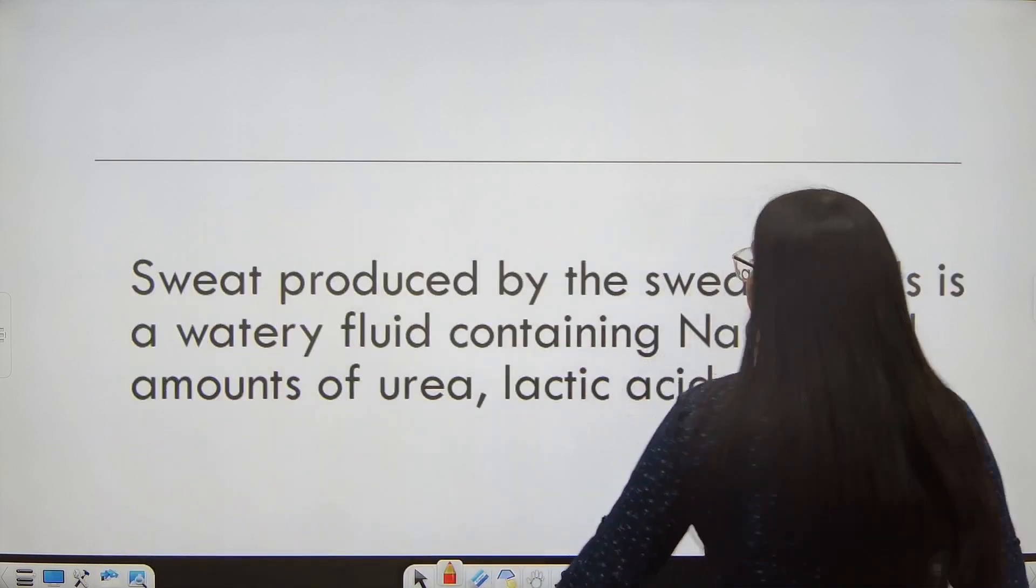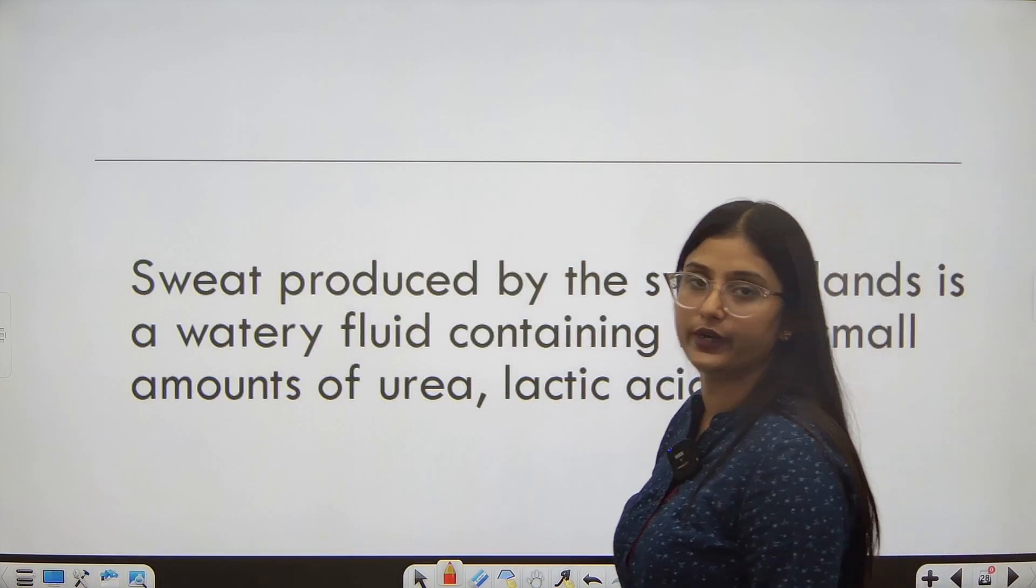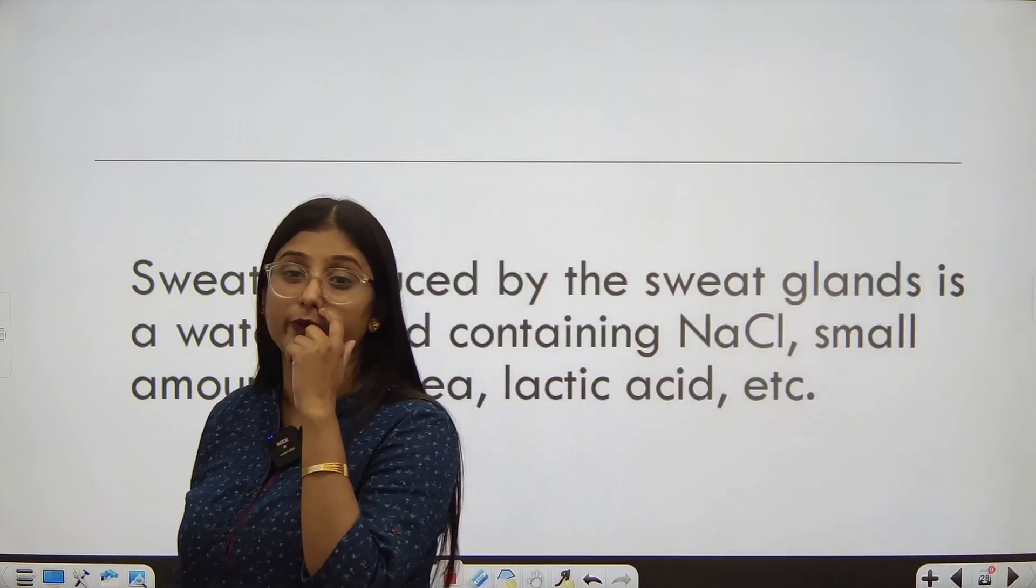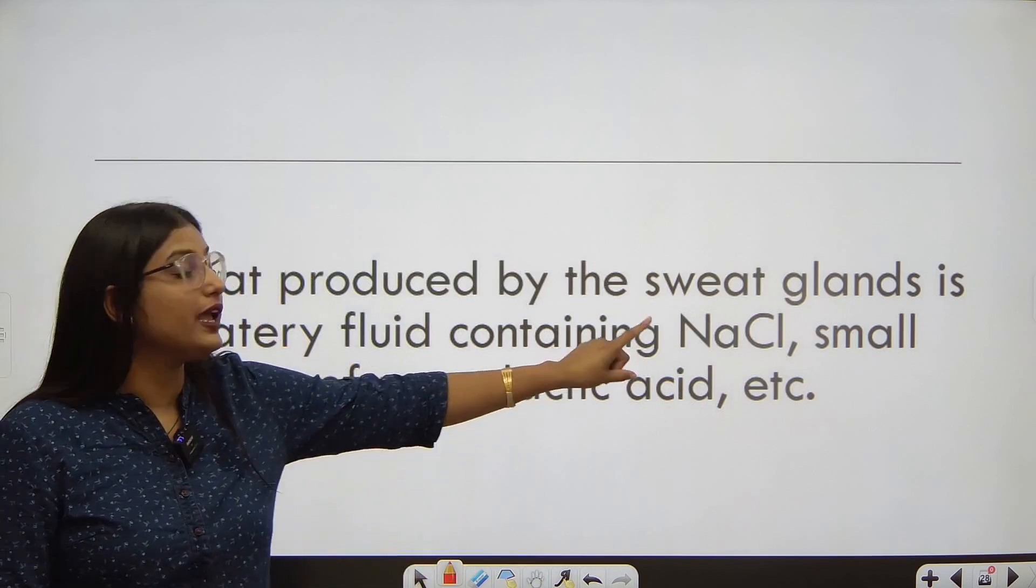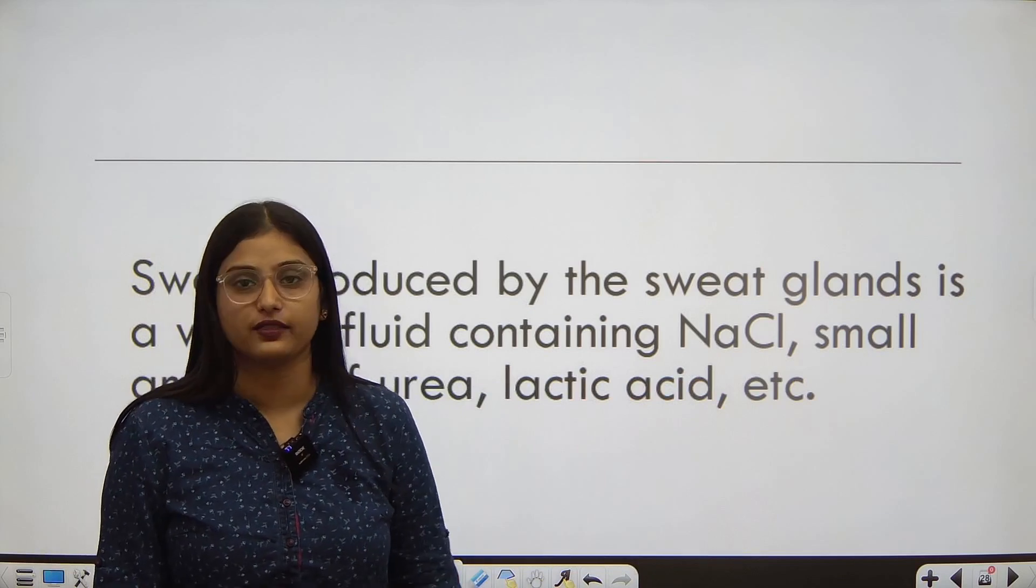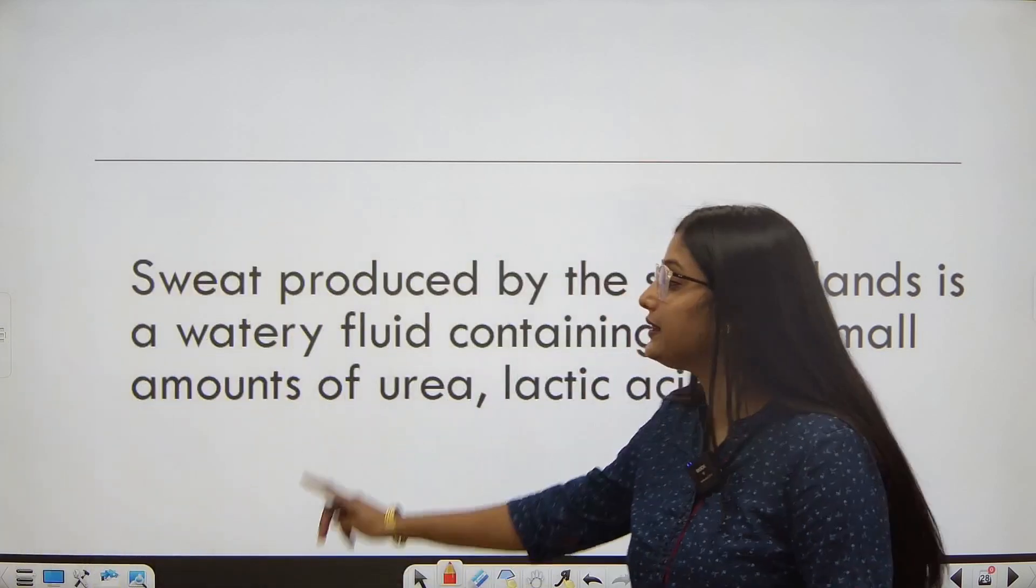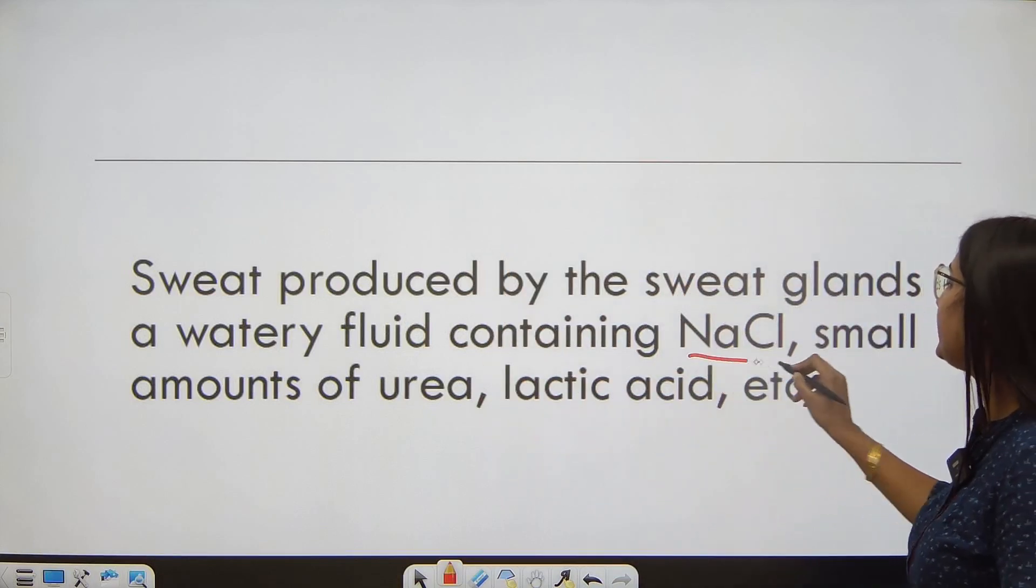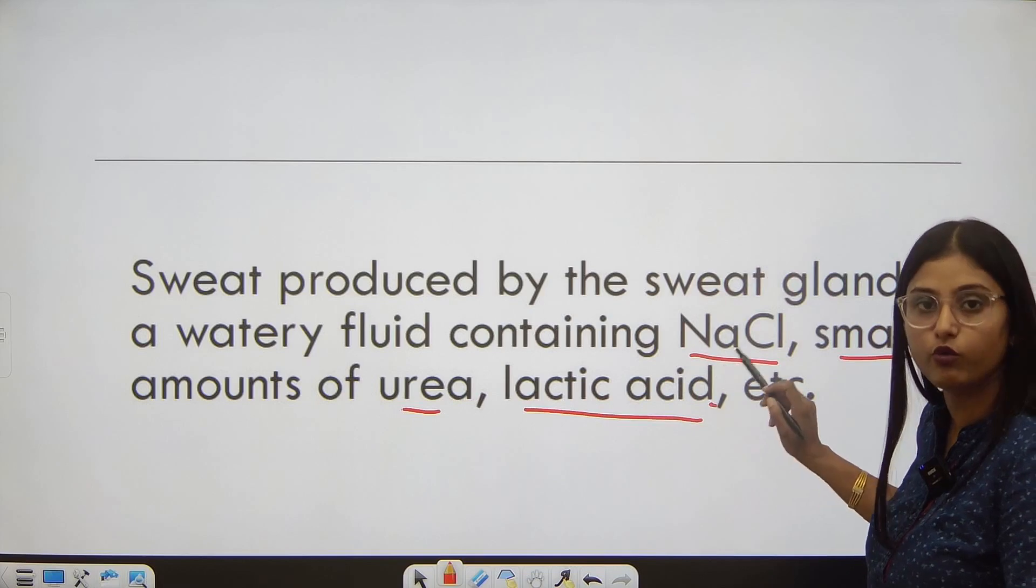Sweat produced by the sweat gland is a watery fluid containing mostly water, NaCl, urea, and lactic acid. By this you should know what things are coming out in our sweat apart from water.